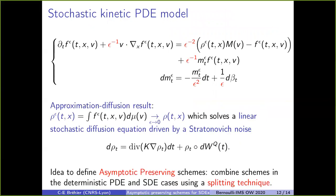The initial motivation was to look at stochastic kinetic PDE models, where we have a solution f_epsilon satisfying a PDE with epsilon^{-1}, epsilon^{-2}, and epsilon^{-1} in the stochastic part, involving an Ornstein-Uhlenbeck process. We are able to define asymptotic preserving schemes for these models using splitting techniques.